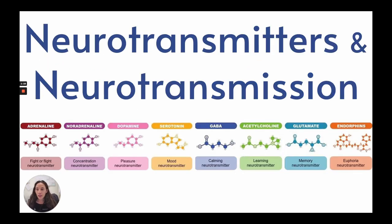There are different types of neurotransmitters in our brain. These are some of them: adrenaline, noradrenaline, dopamine, serotonin, GABA, acetylcholine, glutamate, and endorphins.